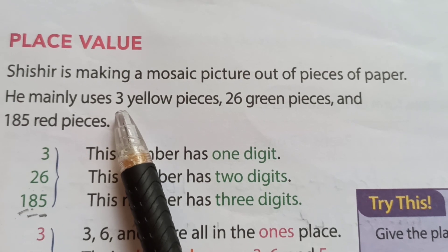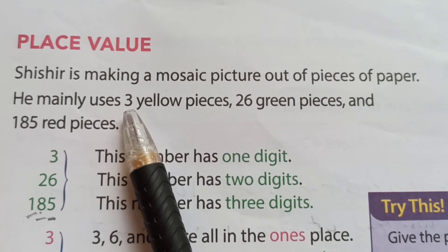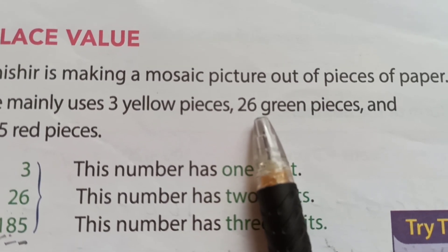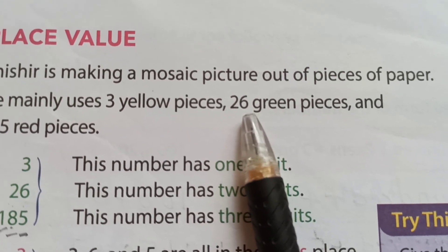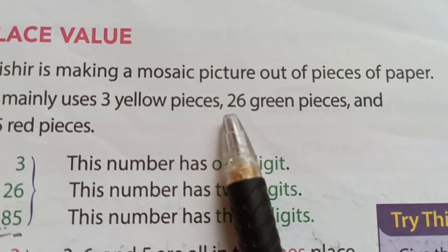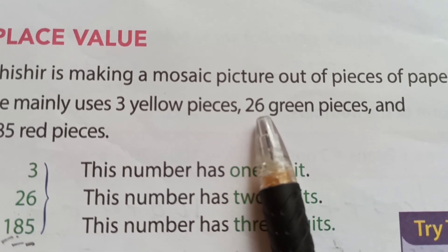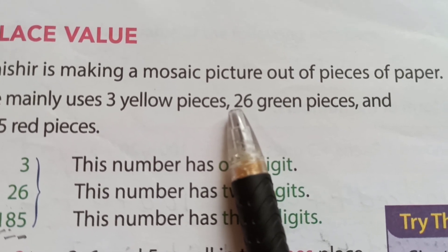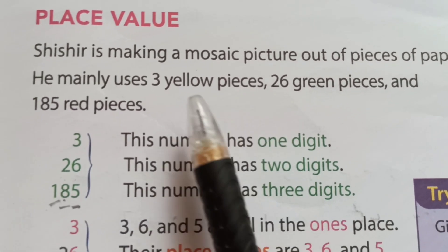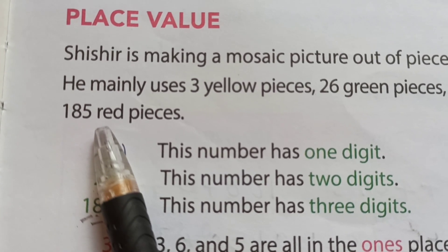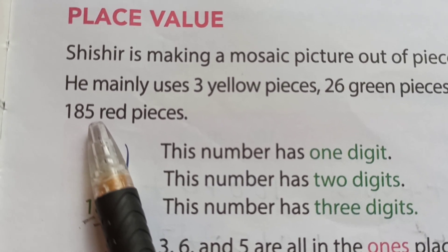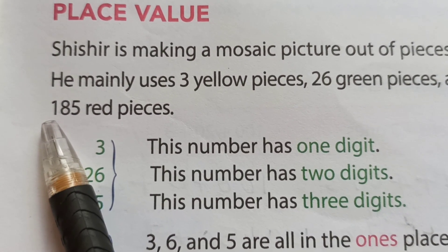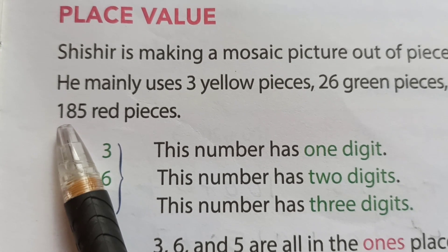This number 3 means 1's place. And this number 26 — 6 means 1's, six 1's. And 2 tens means 26, so this 2's value: 2 tens means 20. See here, 185: five 1's, eight 10's, and this one is the 100's. Their position, their place.